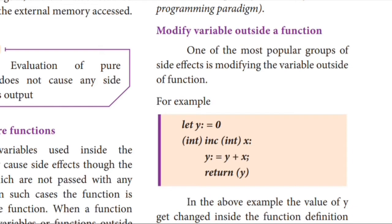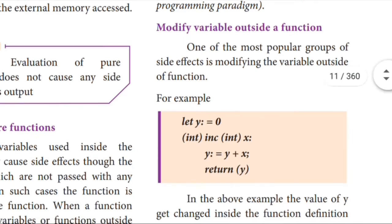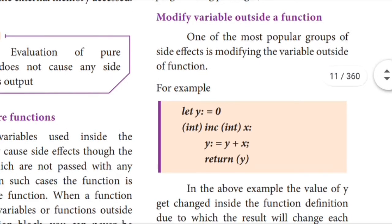Let us see a small program for impure function. Let y is equal to 0. Now y is equal to y plus x. Consider y and x as variables. We are going to add those variables and store the result in y. It means after adding, the output will be stored in y, and we are returning that y variable to the main program. So y is the third person here — like your friend.